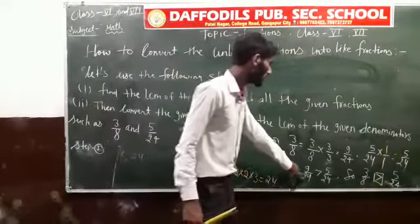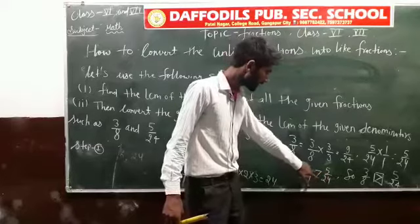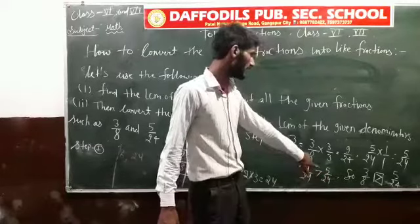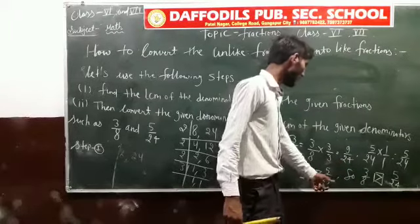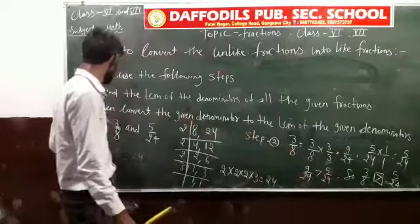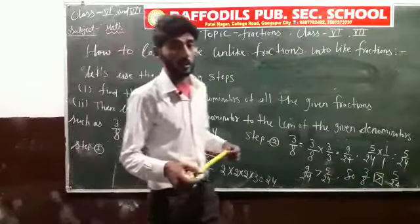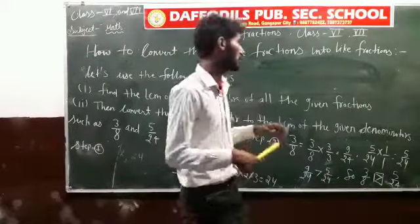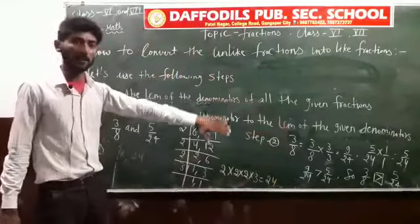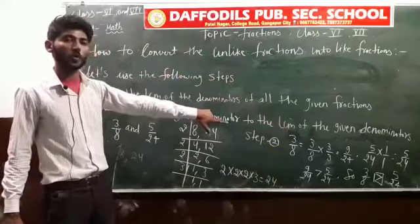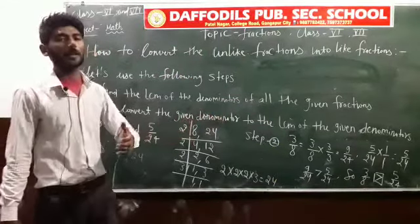So the result is 9/24 and 5/24. You can see that 9 is greater than 5, so 9/24 is greater than 5/24, and therefore 3/8 is greater than 5/24. So you follow these steps: first find the LCM of denominators, then make the denominators equal to the LCM. It's very easy — just practice a lot of questions.